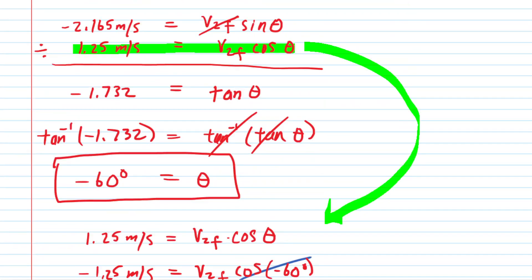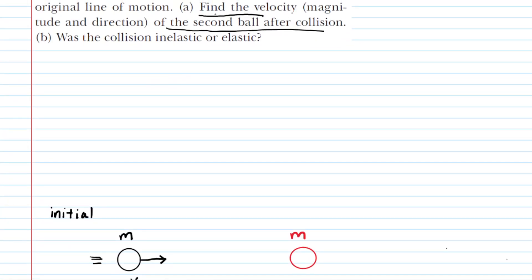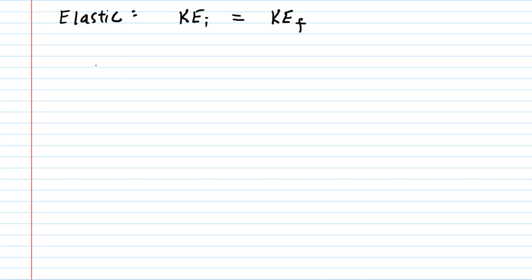There is a follow-up question asking what type of collision this was. We're done with part A — we found both the magnitude and direction of ball two's velocity. Part B wants to know if the collision was inelastic or elastic. If the collision was elastic, the initial kinetic energy of the balls must equal the final kinetic energy. So we will calculate expressions for both the initial and final kinetic energy, and if they're equal, the collision is elastic.